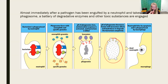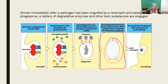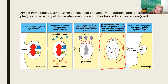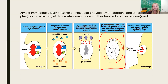Once the neutrophil has spent all of its granules, used up its lysosomes, and destroyed the bacteria it has engulfed, it's going to die. It shrivels up into a compacted little piece of debris, and then the macrophage is going to gobble up the neutrophil, because macrophages are responsible for cleaning up and helping the tissue repair itself.